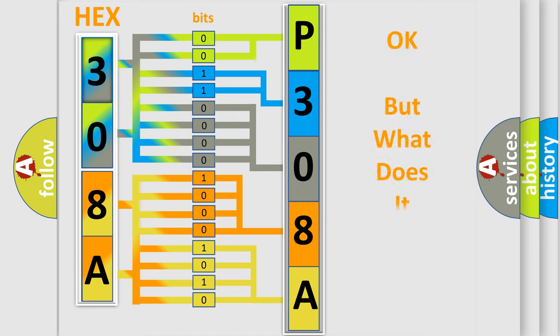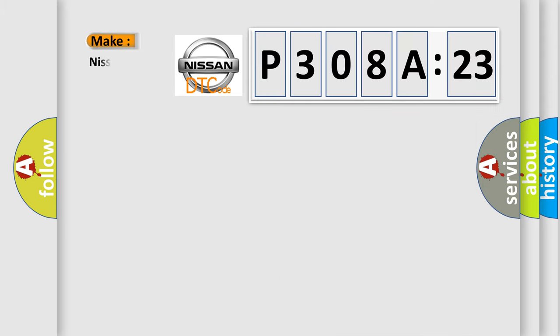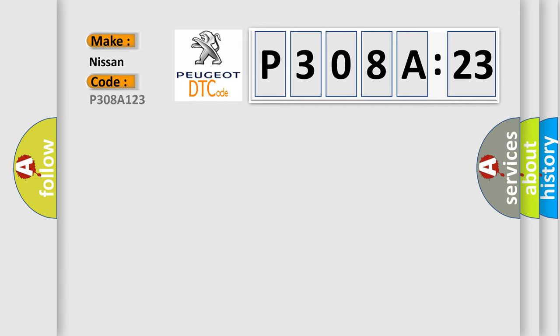The number itself does not make sense to us if we cannot assign information about what it actually expresses. So, what does the diagnostic trouble code P308A123 interpret specifically for Nissan car manufacturers?